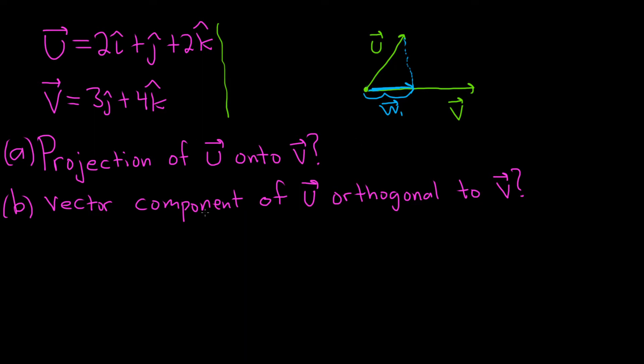What about part b? The vector component of u orthogonal to v. If you draw a vector straight up perpendicular to v and stop it at the tip of u, that's w2. That's part b. It's called the vector component of u and you can see it's orthogonal to v.